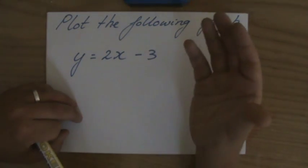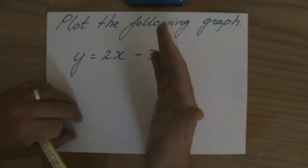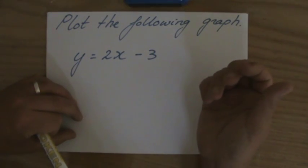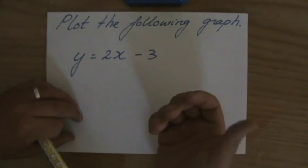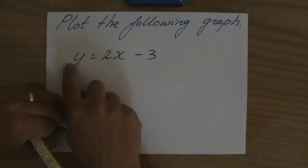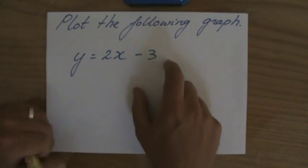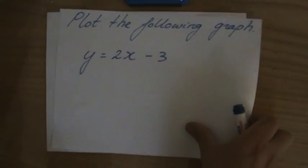Before I start, y equals 2x minus 3, I realize, is a linear equation. If I draw that, I get a line, a straight line. All lines are straight, because otherwise we would call them a curve or something else. But a linear equation when you draw it is a line.